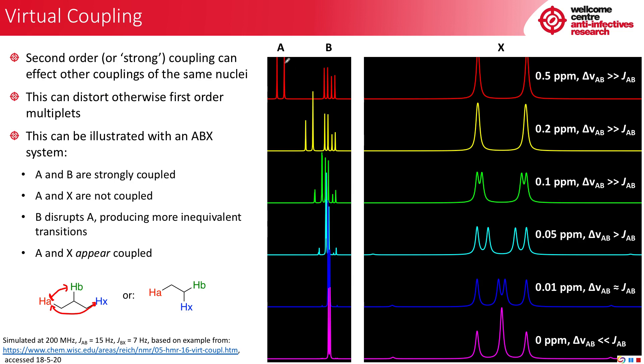So here we have A and B, their signals are 0.5 ppm apart. This is much larger than the J value. And you can see a little bit of roofing. That's about it. And you can see the signal for X. That is a nice doublet. And that's just the BX coupling. Now, as we move to a gap of 0.2 ppm, you can see that this roofing is much more pronounced. But again, we still have a nice doublet just for the X coupling here.